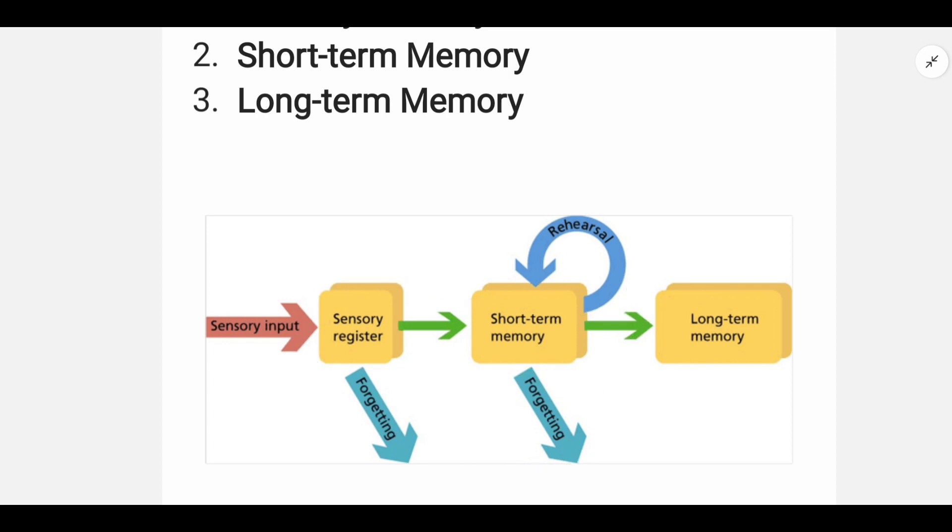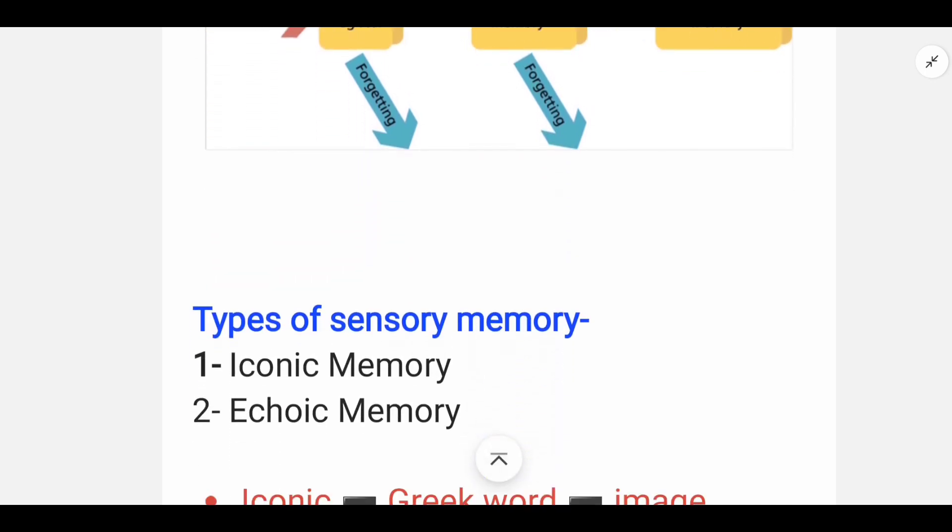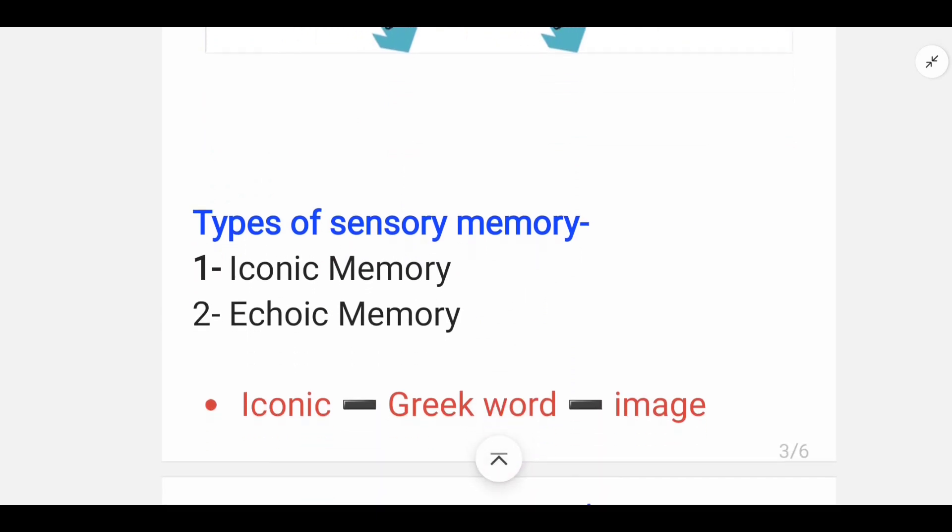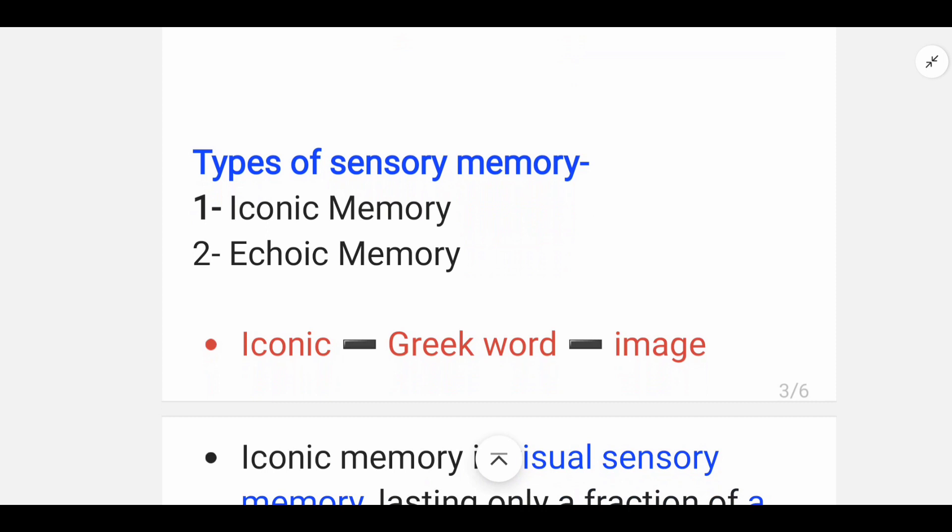Now let's see the types. The proper process we will discuss in the next video. Sensory memory has two types: one is iconic and the second is echoic memory.